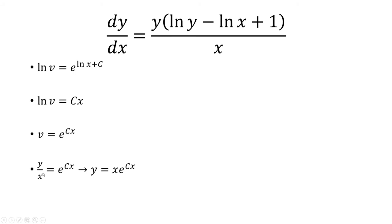Or rather, xv is equal to y. So that means v is equal to y over x. Multiply both sides by x to get that y is equal to x times e to the cx.